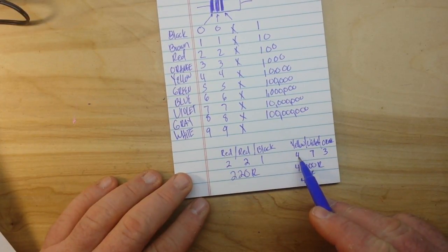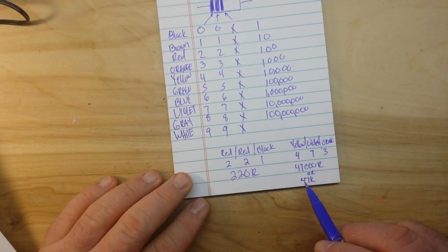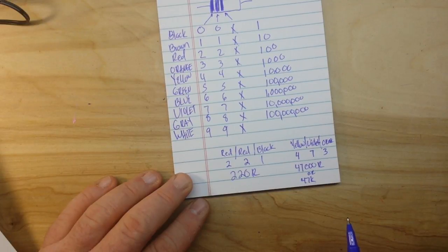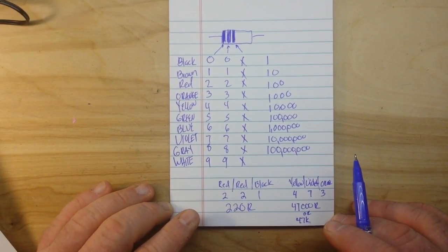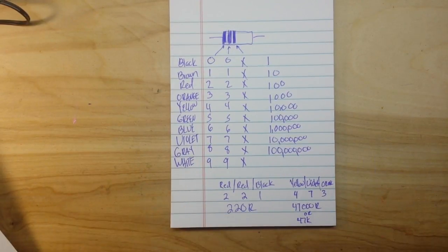First digit four, second digit seven, number of zeros is three. 47k, 47,000 ohms. It's pretty easy, right? There's just one more thing that we need to talk about.